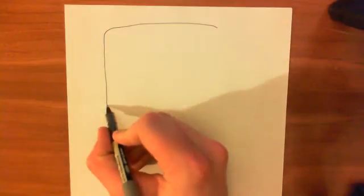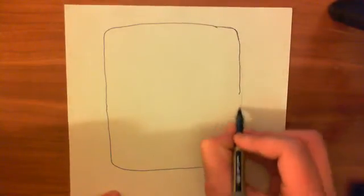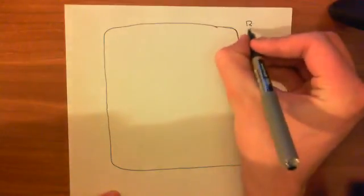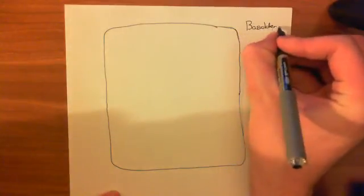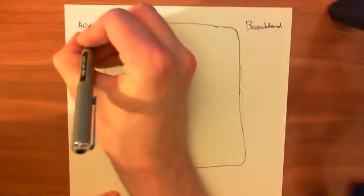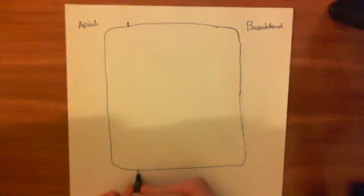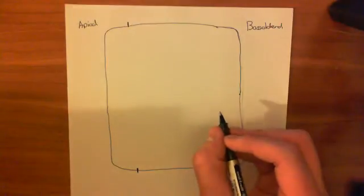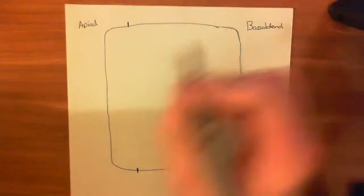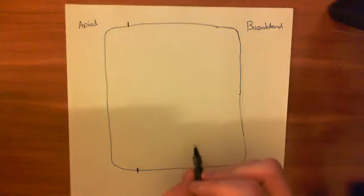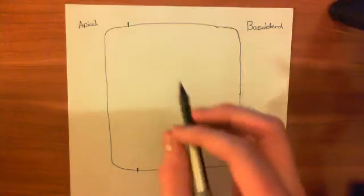Let's say we have an epithelial cell here, which I'll draw nice and big so we've got lots of space to work with. This is the basolateral side over here, and this is the apical side over here. You have tight junctions joining this epithelial cell with the neighboring one, so that the cell becomes polarized. Now, if you want to signal for this cell to start secreting salt, then there are two pathways which activate salt secretion.